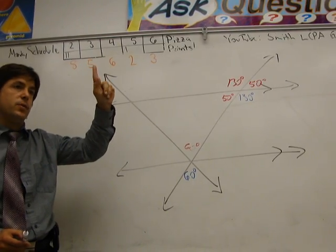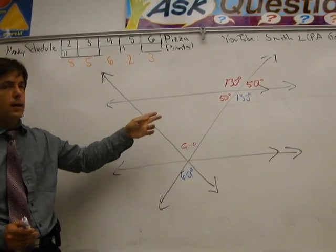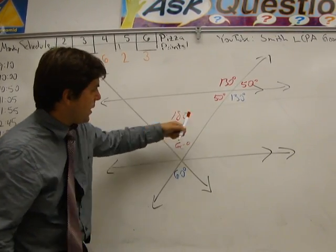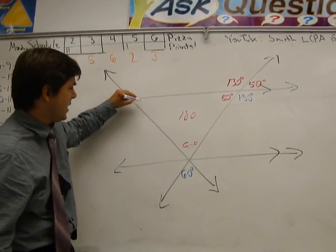The number of sides is 3. 3 minus 2 is 1. 1 times 180 is 180. Therefore, triangles always add up to 180 degrees. So this adds up to 180. 50 plus 60 is 110. So this has to be 70.